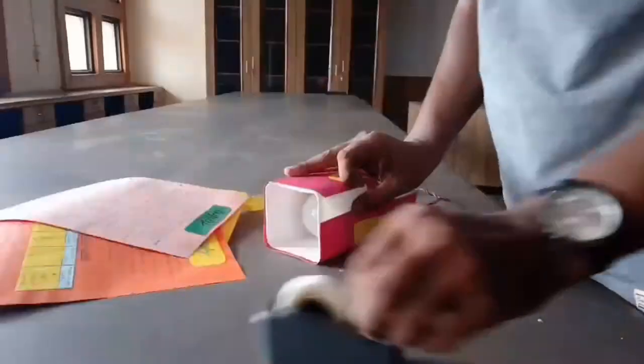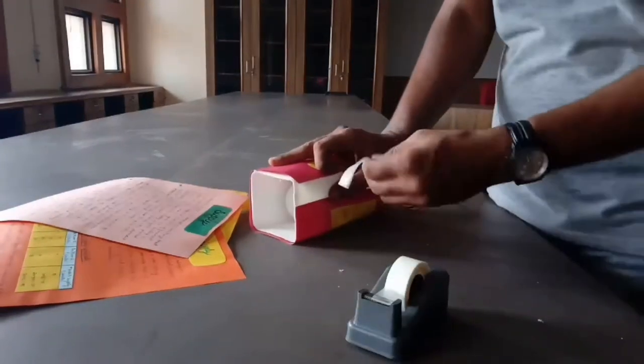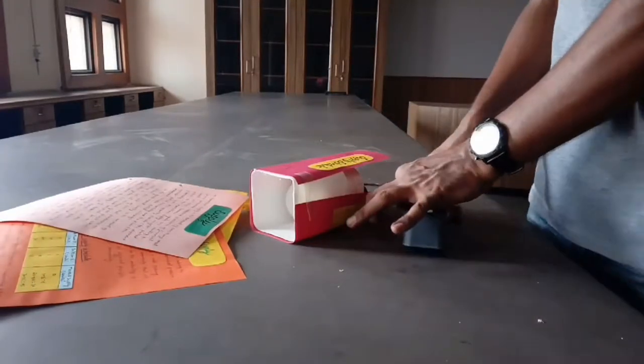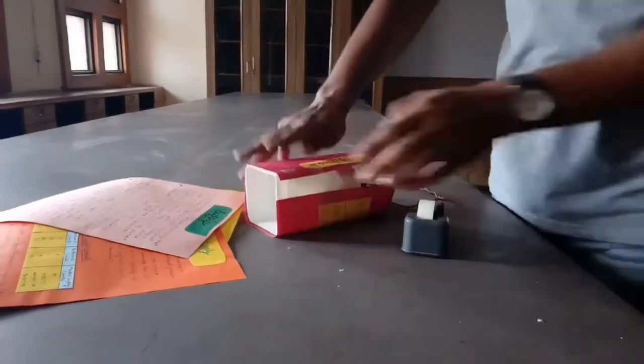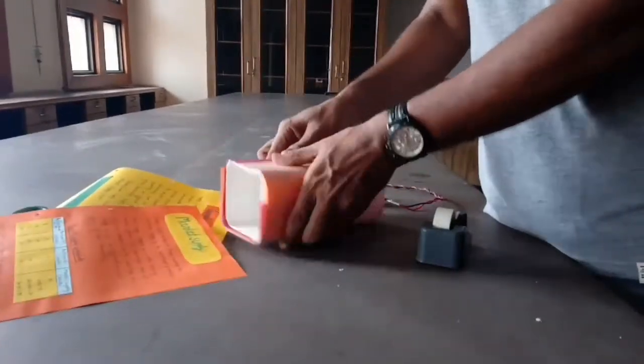Now we have to make the jar opaque. We can cover it with thick rough papers or we can simply use aluminum foil. According to me, aluminum foil will be better.